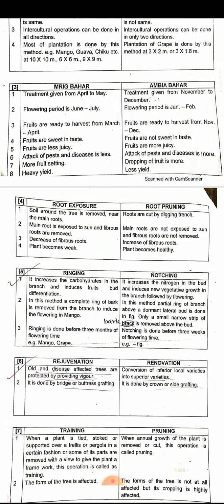Next difference: root exposure and root pruning. In root exposure, the soil around the tree is removed and roots are exposed to sunlight. In root pruning, the roots are cut by digging a trench.